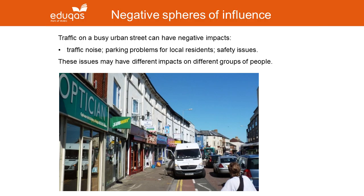Those impacts may be different for different groups of people. For instance, a very young child or an elderly person who is disabled would find it much harder to cross the road than somebody who is able-bodied. So people have different perceptions of spheres of influence.